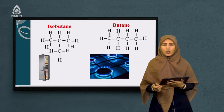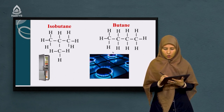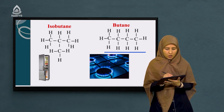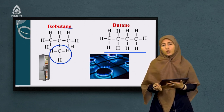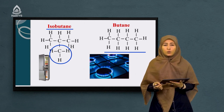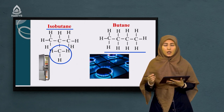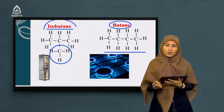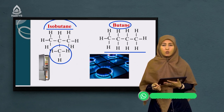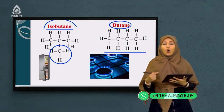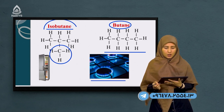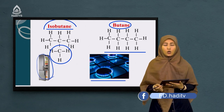اگر یک الکانی با چهار اتم کاربون باشه نامش می‌شه بیوتان. اما اگر همین الکان نحوه اتصال اتم‌ها به قسمی باشه که یک الکان معاوضه‌دار را تشکیل بدن، نامش می‌شه ایزو بیوتان. پس متفاوت بودن نحوه اتصال اتم‌ها باعث می‌شه که نامشان فرق کنه. از بیوتان در گاز طبیعی استفاده می‌شه. از ایزو بیوتان به عنوان سرد کننده در یخچال‌ها استفاده می‌شود.